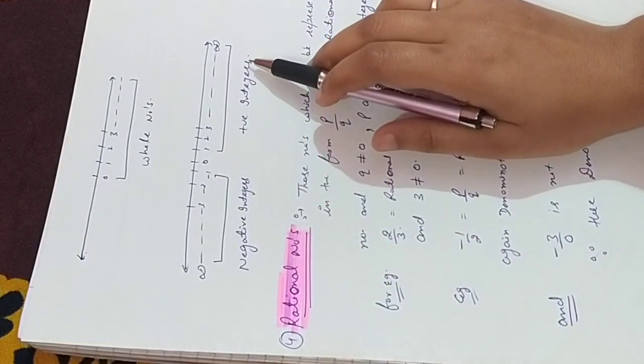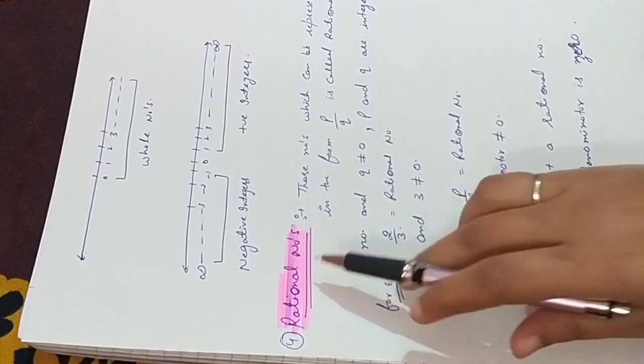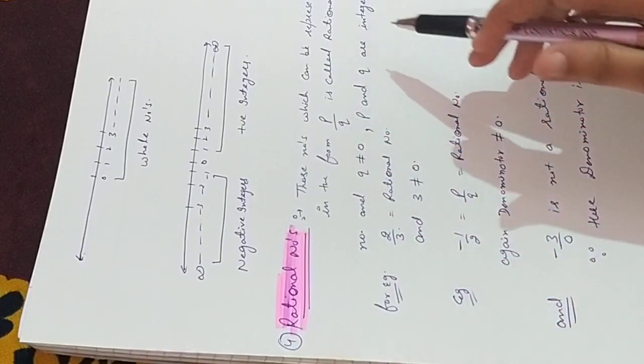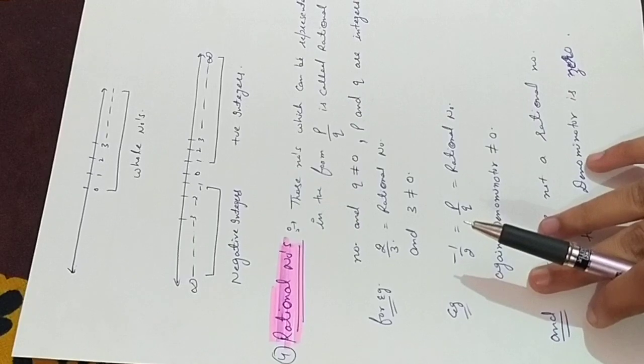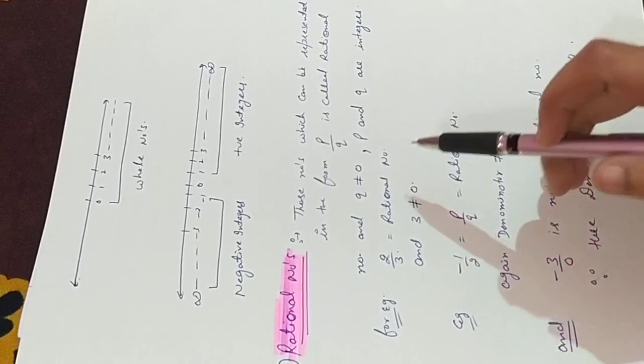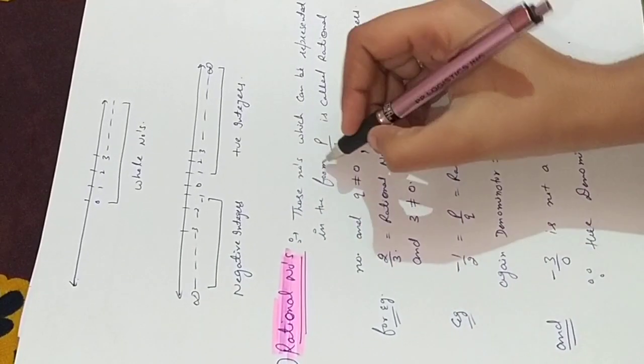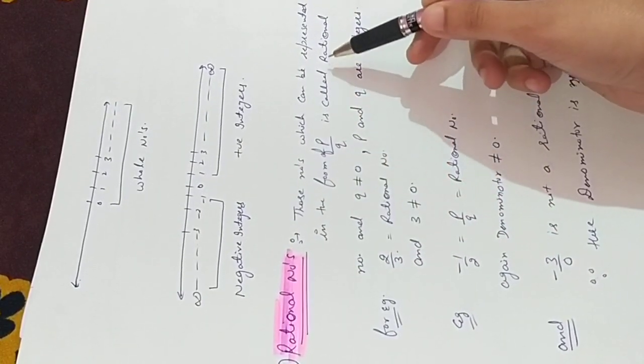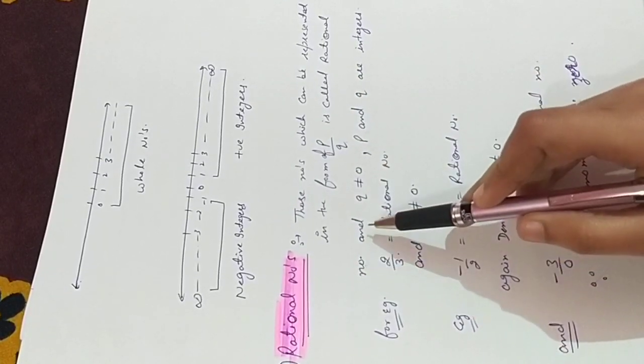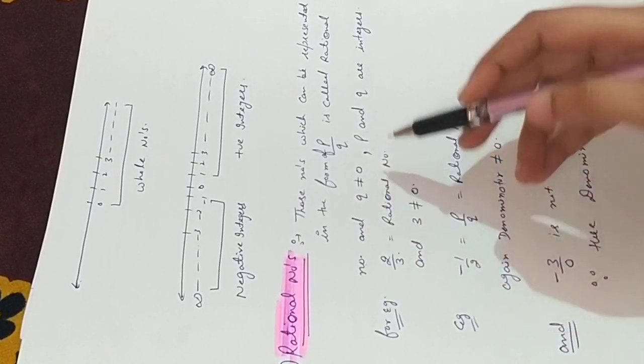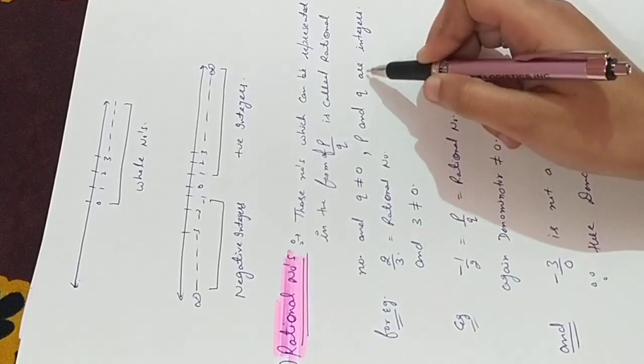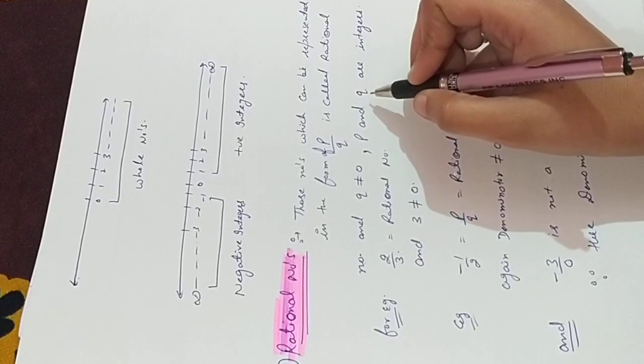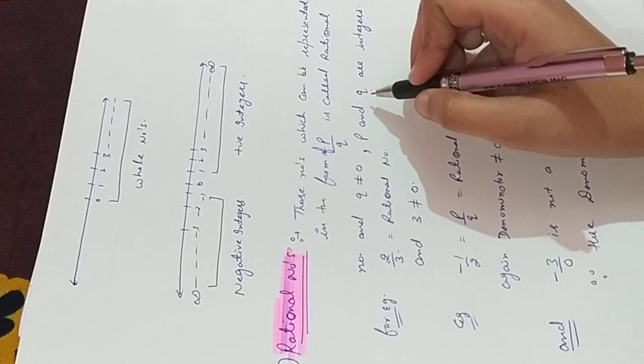Now, but our main topic is rational numbers. What are rational numbers? The numbers which can be represented in the form of P upon Q is called rational numbers, where Q is not equal to 0. P and Q are integers. That means P and Q would be positive, negative.